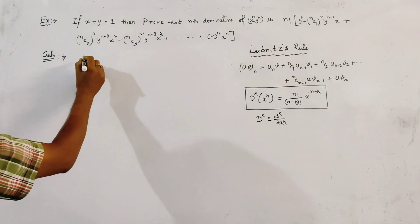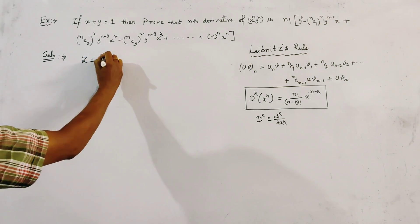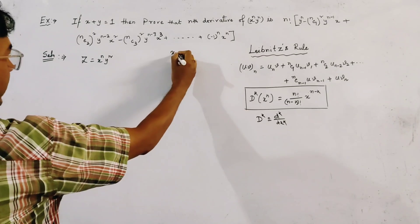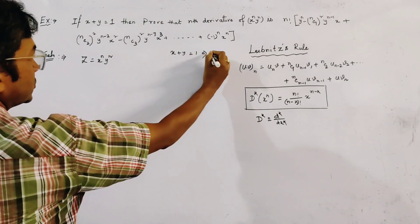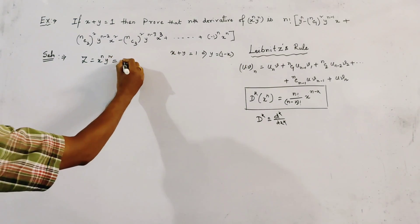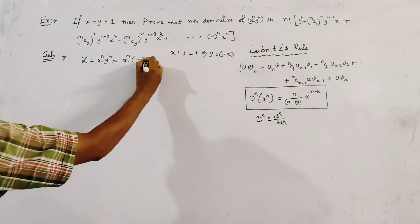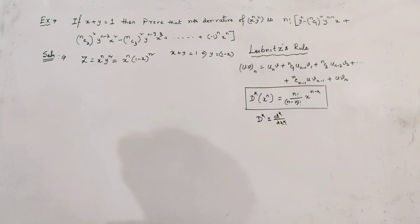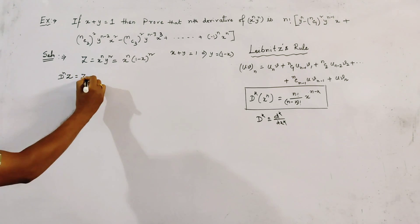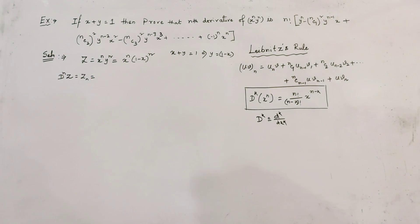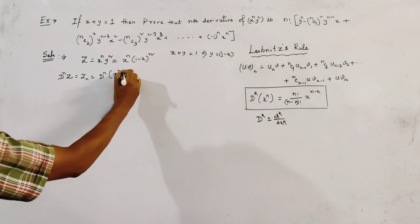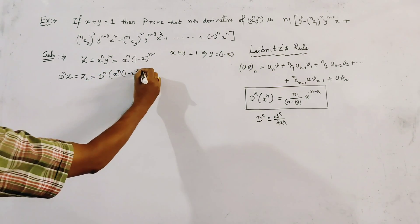We first let z equal x to the power n times y to the power n. Since it is given that x plus y equals 1, we have y equal to 1 minus x. Substituting this value, z becomes x to the power n times (1 minus x) to the power n. Now we need to find D_n of z, that is the nth derivative of x^n times (1 minus x)^n.